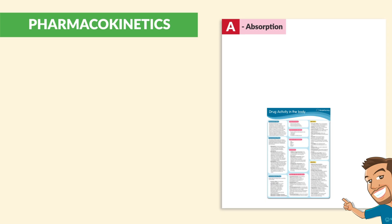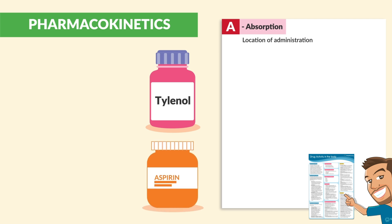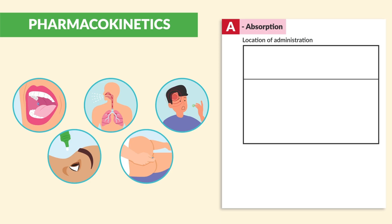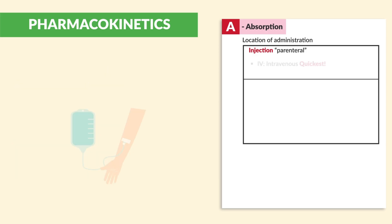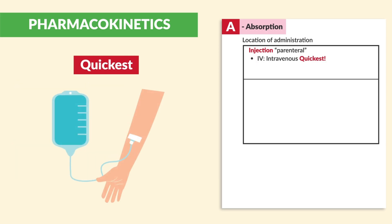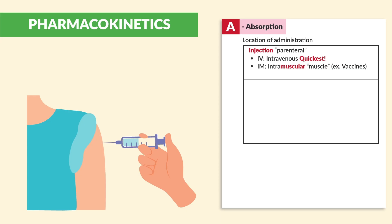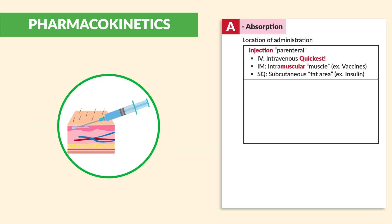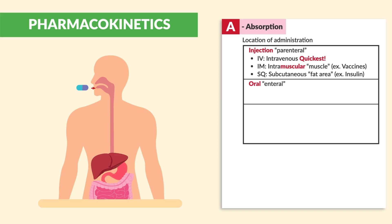Getting into the specifics, starting with A for absorption. This is the location of administration. We've all probably taken Tylenol or aspirin orally for a headache, but there are many other ways to get medication into the body. In the hospital setting, we often use injection, or what's known as parenteral. Whether IV — intravenous — which is the quickest, for example IV antibiotics or pain meds. Or IM — intramuscular — which goes into the muscles, like vaccines. Or SQ — subcutaneous — which goes into the fat area, for example when administering insulin. Or, as mentioned, orally — what's known as enteral, meaning in the GI tract. PO means per oral, for example Tylenol.